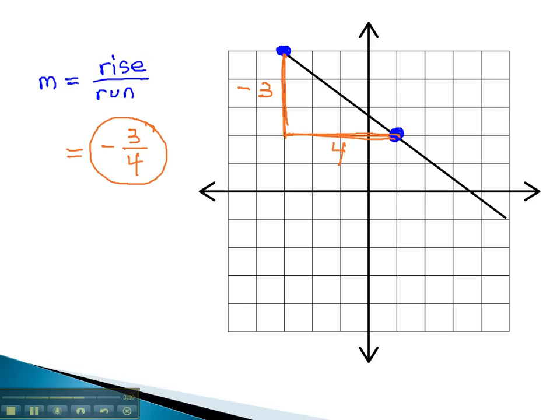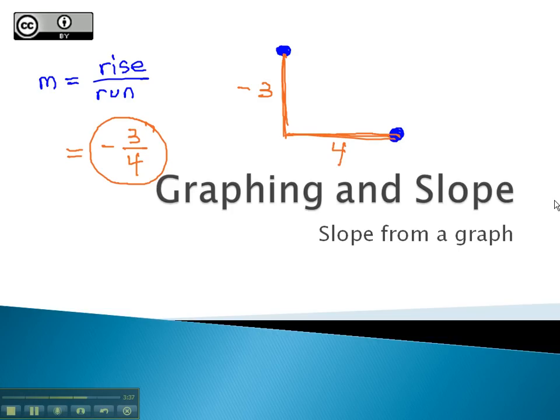By counting the rise and the run, we can find how steep, or what is the slope, or rate of change, of our line.